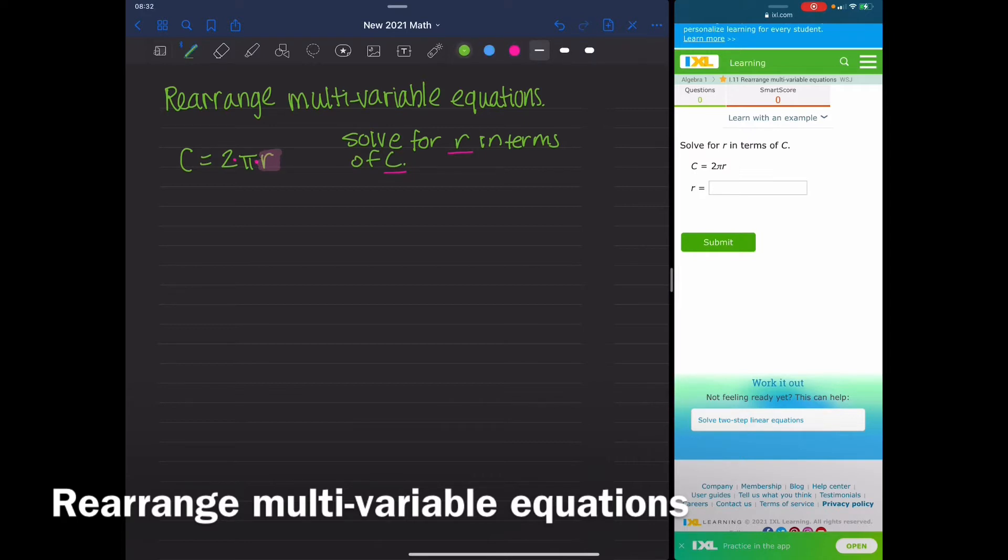So again, remember with PEMDAS, we want to undo whatever is happening to the variable in order to get it by itself. So C equals 2πR. I'm going to divide the left and the right by 2π.